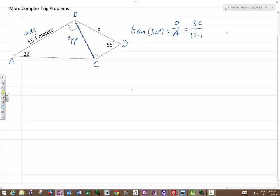And we use the calculator and find out that tan 32 is 0.6249. The important bit here is that BC divided by 15.1 is 0.6249. So that means that BC is 0.6249 multiplied by 15.1. And again, using the calculator, this tells us that this is 9.4355.